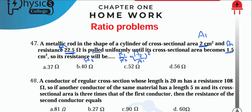R1 = 22.5, area 2 = 1.5 over area 1 = 2. Using Shift Solve, R2 = 40 Ohm.